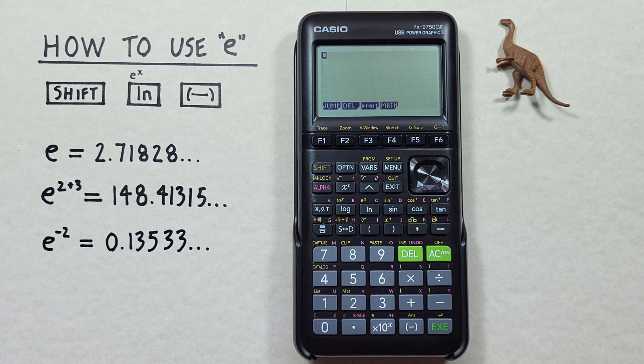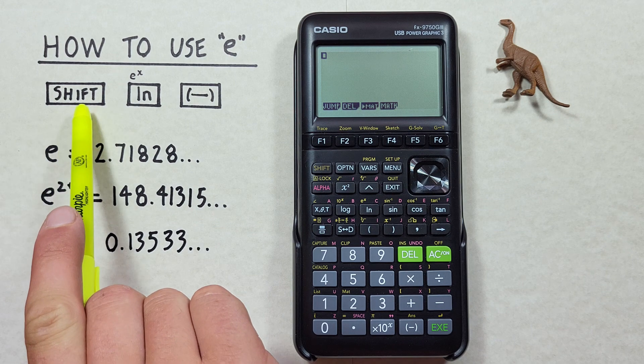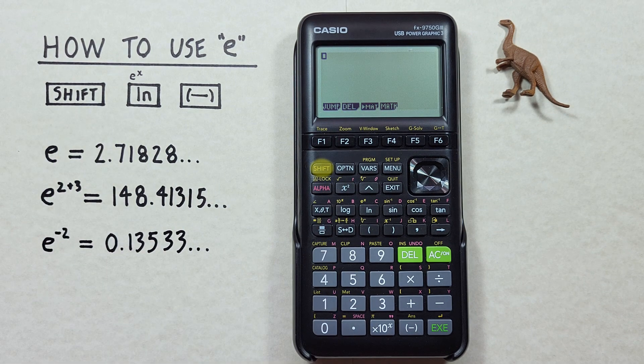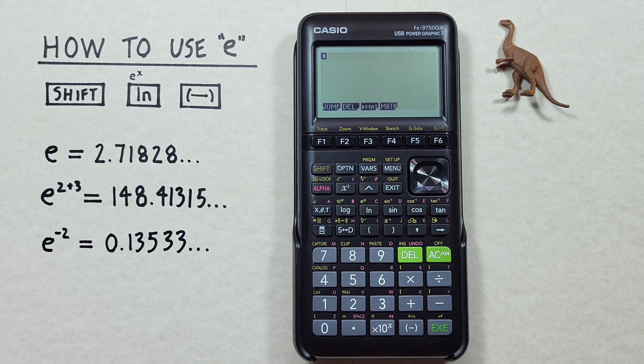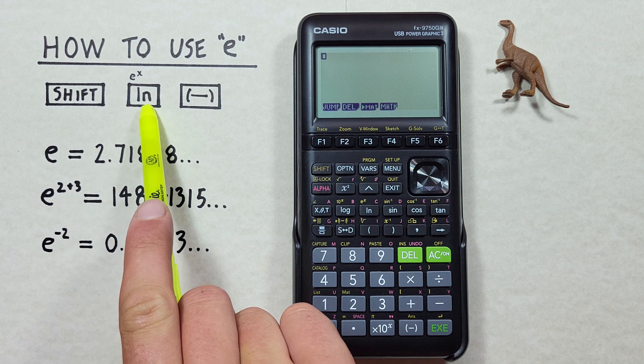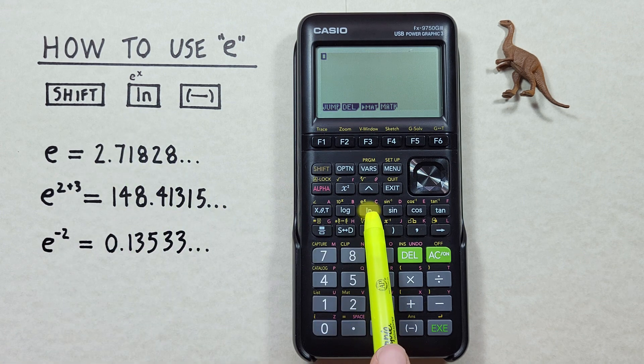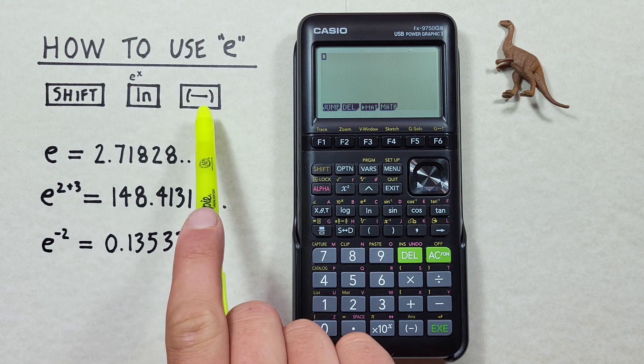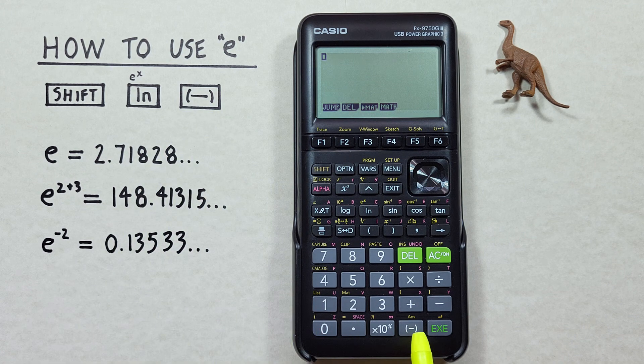To do this, we'll use the shift key that looks like this, located here, the ln or natural log key with the shift function of e to the power of x that looks like this, located here, and the negative key that looks like this, located here.